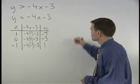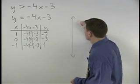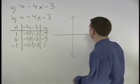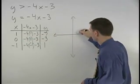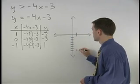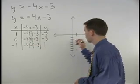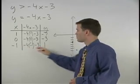So plotting these points on a coordinate system, we have 1, negative 7, 0, negative 3, and negative 1, 1.